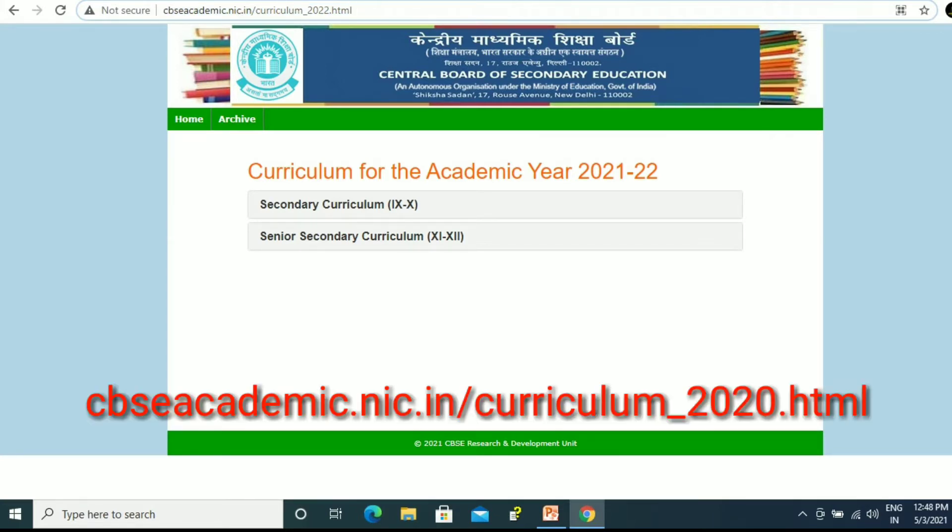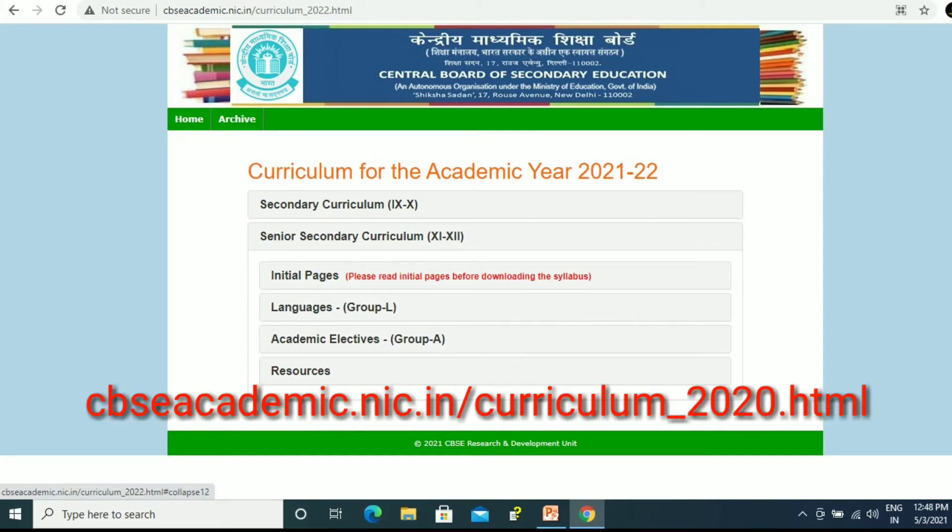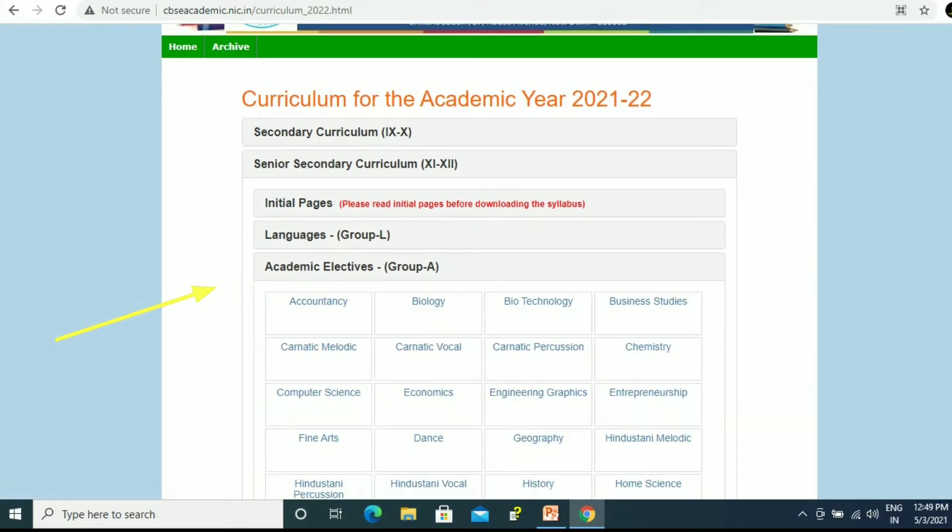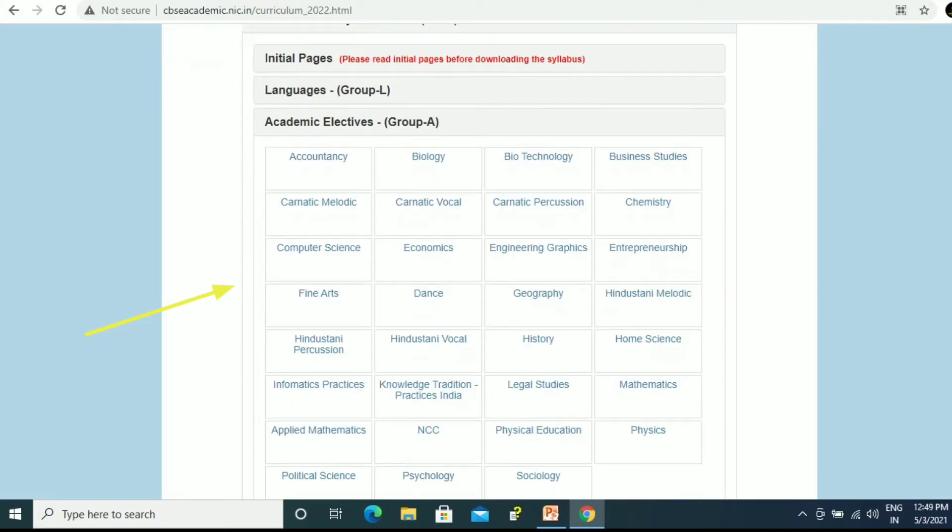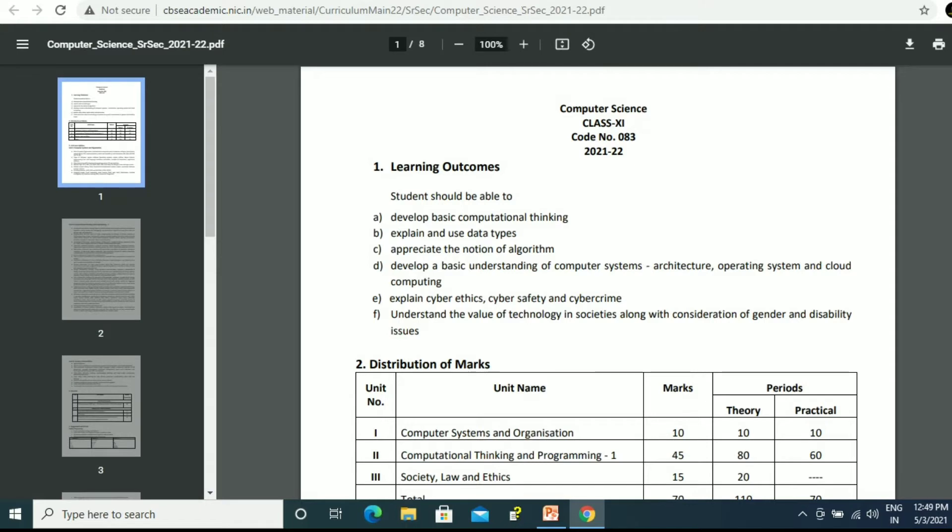The very first step: you have to open any browser and type cbseacademic.nic.in as I have mentioned. You have to click on this option. Click on Academic Electives and then you will be getting an option of Computer Science. As soon as you open this, this page will open.